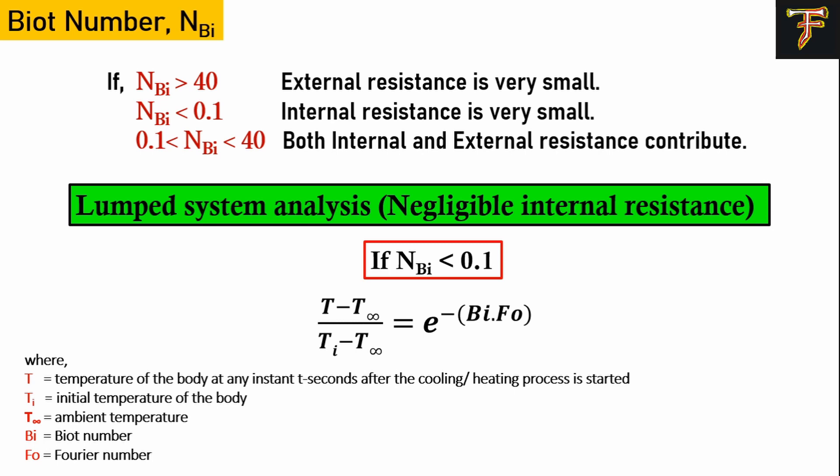Now if our Biot number is less than 0.1, meaning there is negligible internal resistance, in such a case we use it for lumped system analysis. What do we understand from lumped system? It means there will be a uniform temperature throughout the spherical solid ball during heat transfer. In this case, if we want to find out the temperature at any instant, we can define it in terms of Biot number and Fourier number. To understand Fourier number in detail, you can visit our channel and check out our playlist on dimensionless numbers.